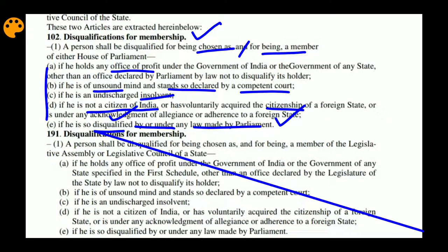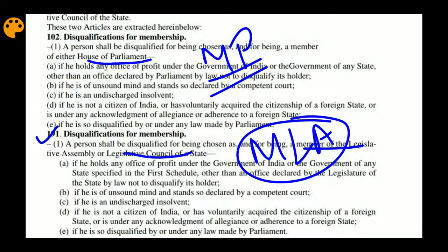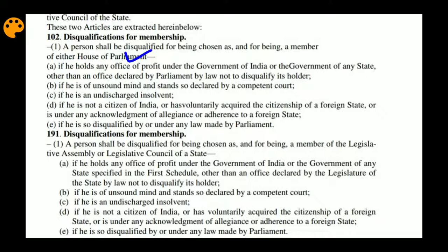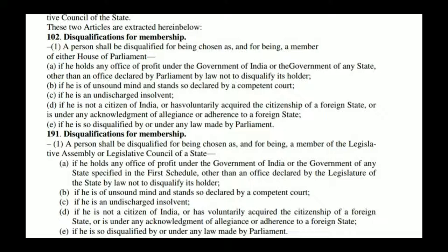Article 102 is for the Member of Parliament, while Article 191 talks about members of a Legislative Assembly or Legislative Council — that is, for MLAs. The same provisions apply, but the difference between MP and MLA is the relevant article number. The words 'for being chosen as' and 'for being a member' appear in both — covering both candidates contesting elections and those who have already won.